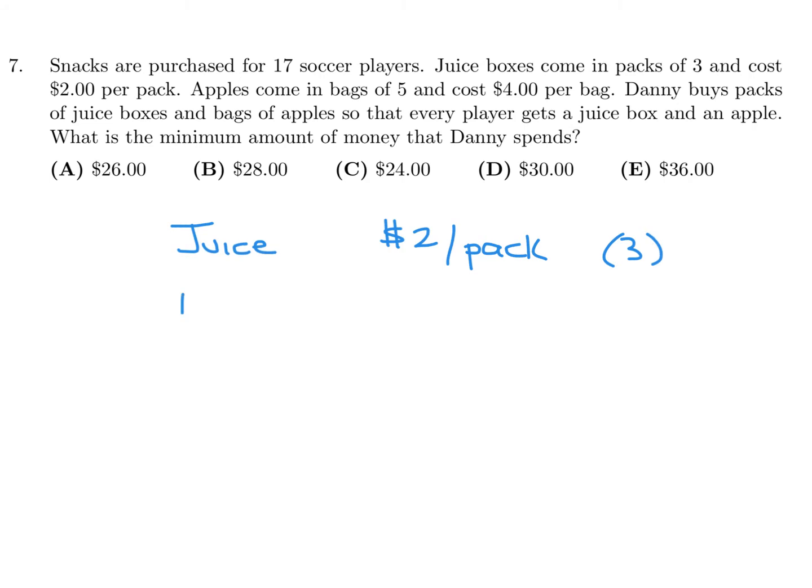We have juice at $2 per pack with 3 boxes per pack, and apples at $4 per bag with 5 apples per bag. We want 17 players to each get a juice box and an apple. For juice, if I buy 6 packs, that's 3 in each pack, so that's a total of 18 boxes, which will be sufficient for the 17 players.